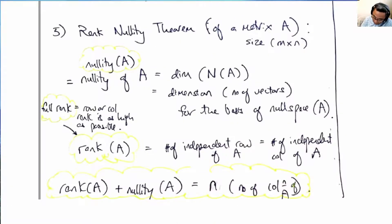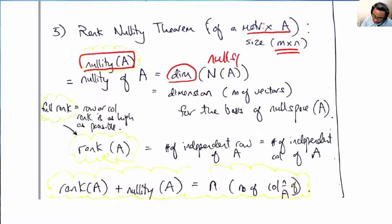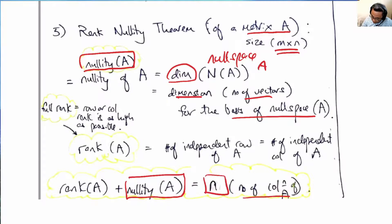Now let's get to rank and nullity with respect to a matrix. For an n by n matrix, the nullity of A is the dimension of the null space of A — that is, the number of basis vectors for the null space of A. The rank of A plus the nullity of A equals the number of columns of A. That is the rank-nullity theorem.